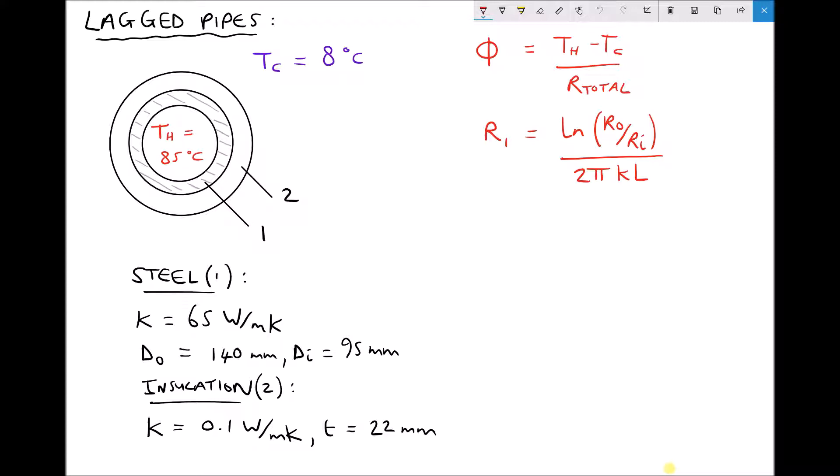In the bottom left hand corner we have some data for the steel and for the insulation. The steel has a thermal conductivity of 65 watts per meter per kelvin and the insulation has a thermal conductivity of 0.1 watts per meter per kelvin. I've also specified that the outside and inside diameters of the pipe are 140mm and 95mm respectively. And finally we've specified that the thickness of the insulation is 22mm.